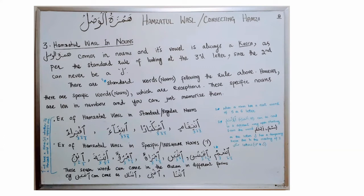Hamzat al-Wassl can occur in nouns and follows the standard rule of looking at the third letter and putting the vowel accordingly. When Hamzat al-Wassl comes in a noun, its vowel is always going to be Kasra, because the second letter is not Laam — so we look at the third letter, and by following the standard rule, if the third letter has Fathah or Kasra, we always put Kasra on Hamzat al-Wassl. There are standard words, some nouns, which follow this rule of looking at the third letter, and if the third letter has Kasra or Fathah, always put Kasra under Hamzat al-Wassl.